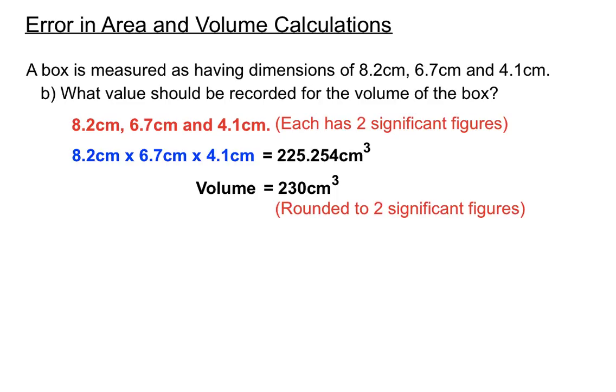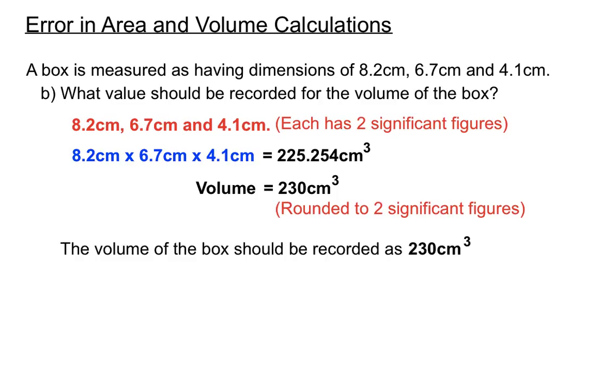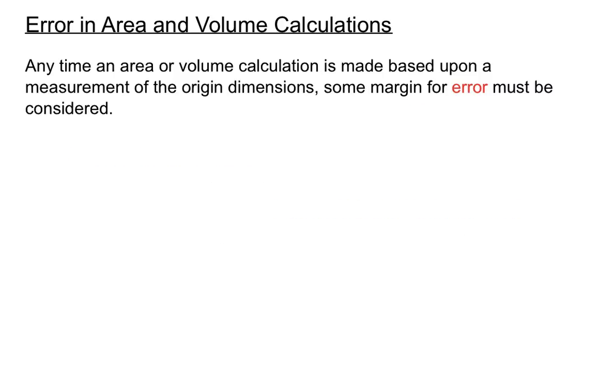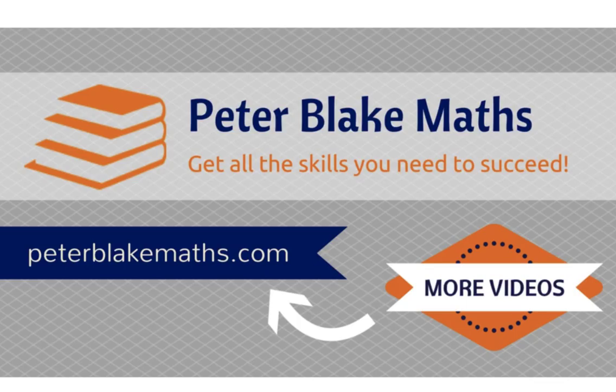So anytime an area or volume calculation is made based on a measurement of the original dimensions, we consider some margin for error and have a systematic way of doing that. Check the video again if you're not sure — quite a lot happened fairly fast. That's how we go through error in area and volume calculations. peterblakemaths.com — see you again soon.